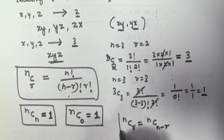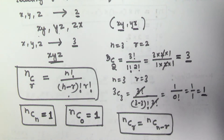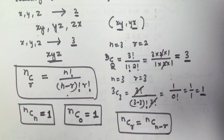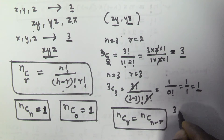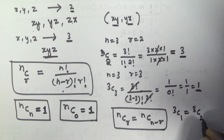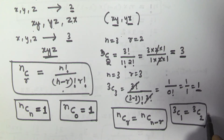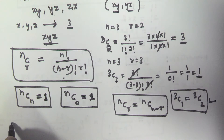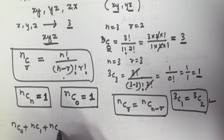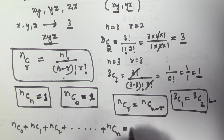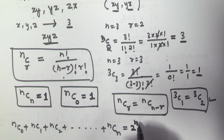For example, 3C1 is equivalent to 3C2, because 3 minus 1 equals 2. If you calculate both values they will be equal. Moreover, the sum of all these values — nC0 plus nC1 plus nC2 and so on up to nCn — is equal to 2 to the power of n.